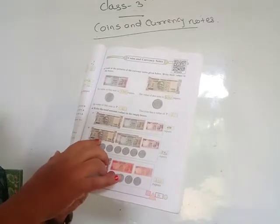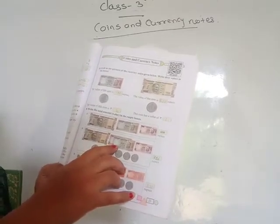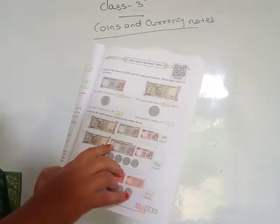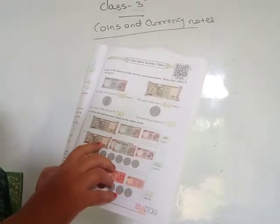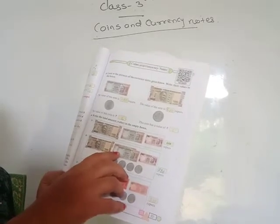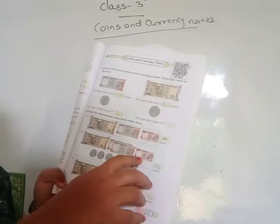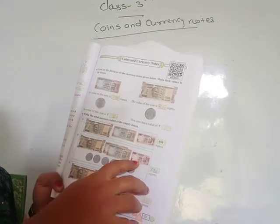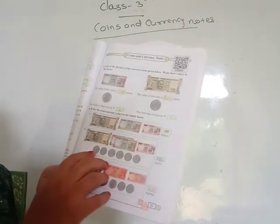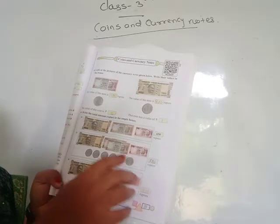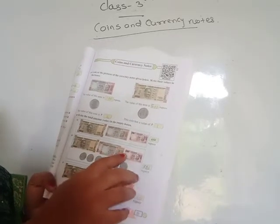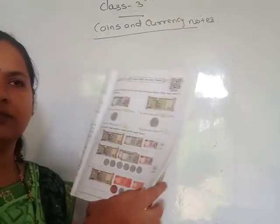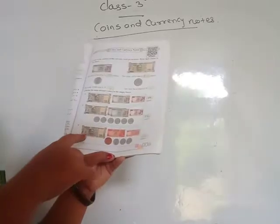Then the second one: here one 50 rupees note, then two 100 rupees notes — that means 200 — then 500 plus 200 is 700, plus 50 is 750, and here coins of 1 rupee — 6 coins — means 756 rupees. Total is 756 rupees.